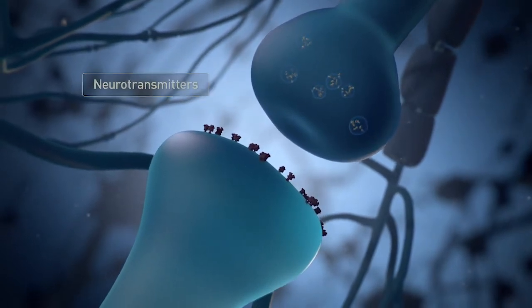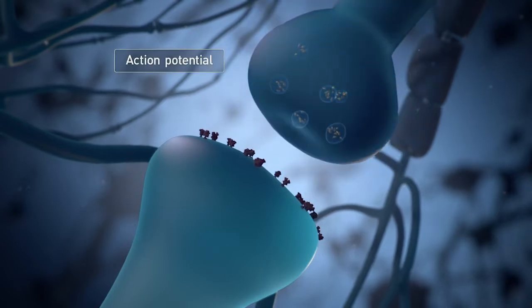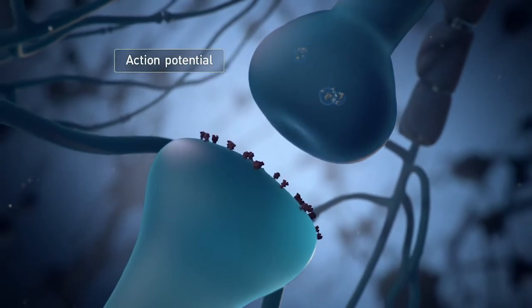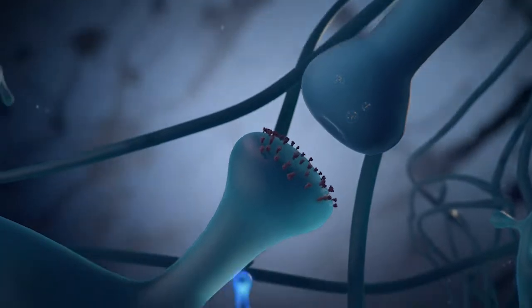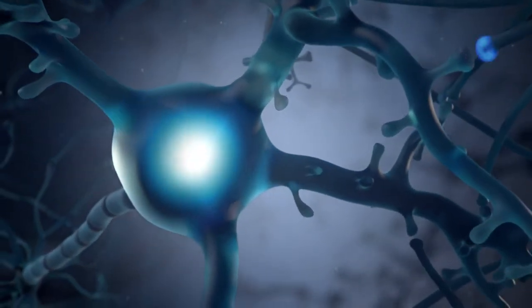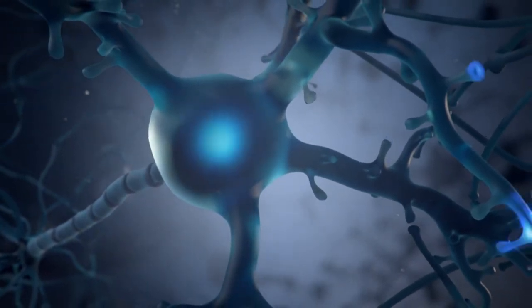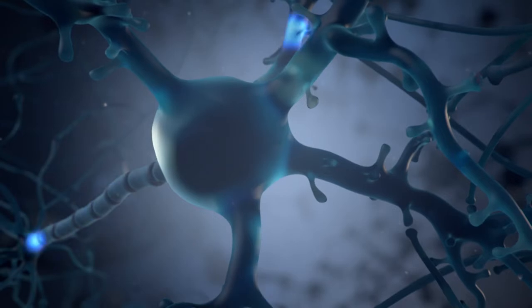Neurotransmitters are released from the end of an axon in response to an electrical spike called an action potential. When a cell receives enough of the right kind of neurotransmitter input, a chain reaction is triggered that causes an action potential to fire and the neuron to relay messages to its own downstream synapses.